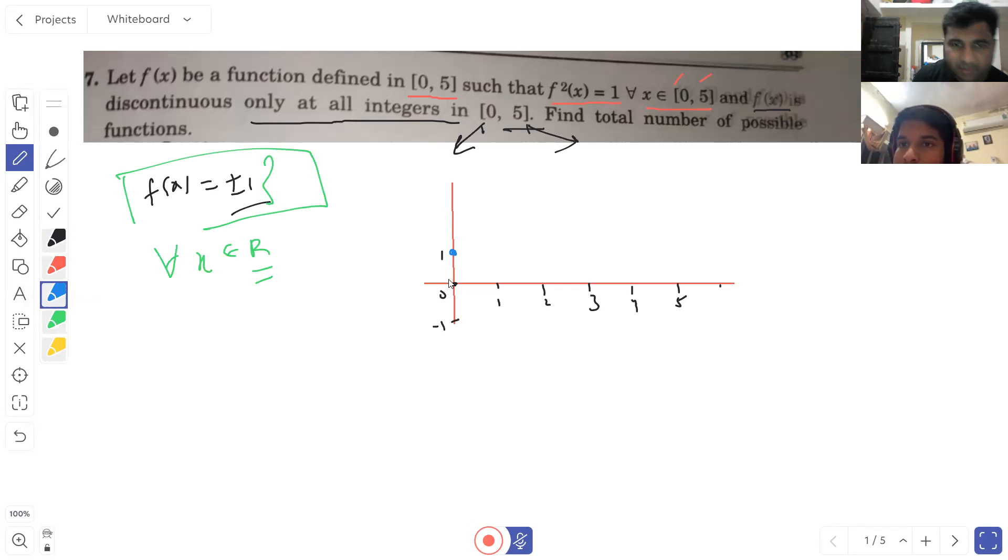How will the graph become? Then you will go to minus 1, then you will open, then close or open the function—discontinuous. Then plus 1, then 2,